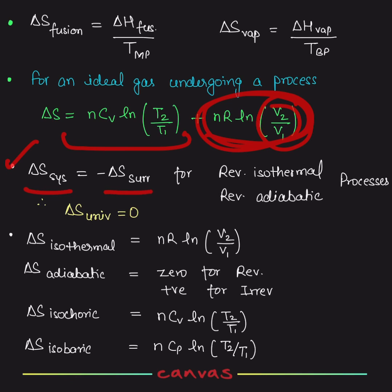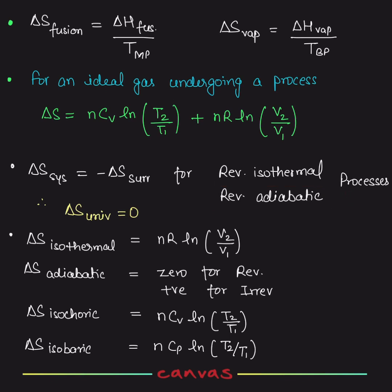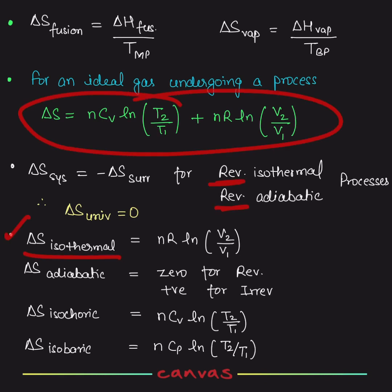Delta S system equals minus delta S surrounding for a reversible isothermal or reversible adiabatic process, because in a reversible process the system and surroundings are almost always in equilibrium. The change in entropy of the system is equal and opposite to the change in entropy of the surroundings. So delta S universe here should be positive, but for a reversible process — which is an ideal process — it is zero. The isothermal delta S formula reduces to nR ln(V2/V1).